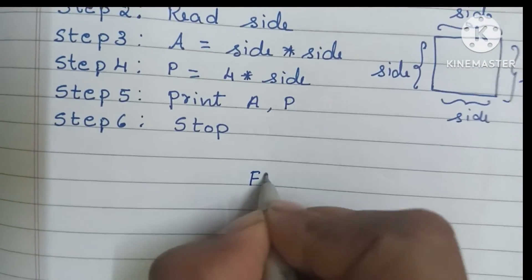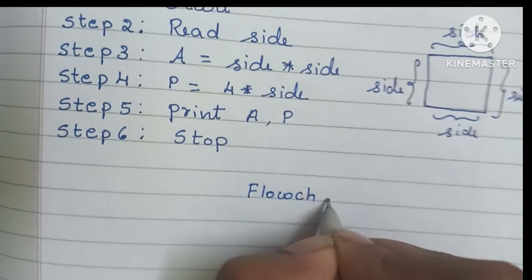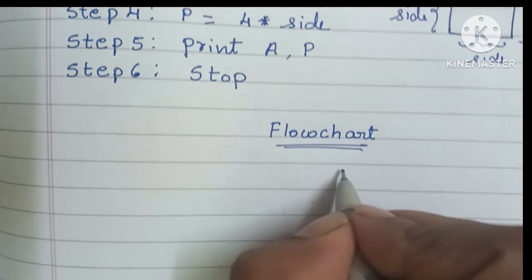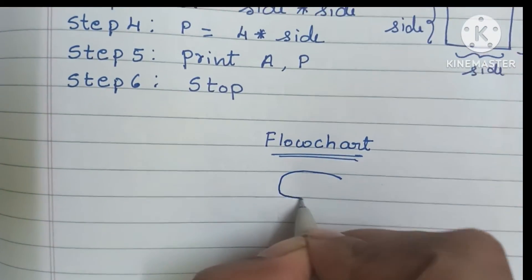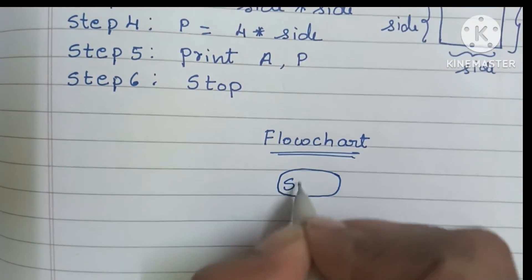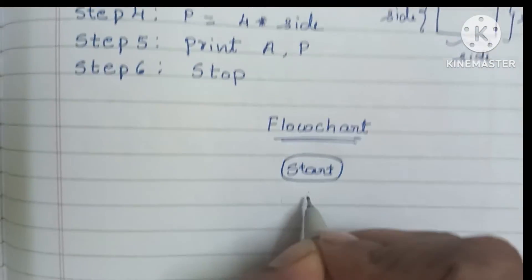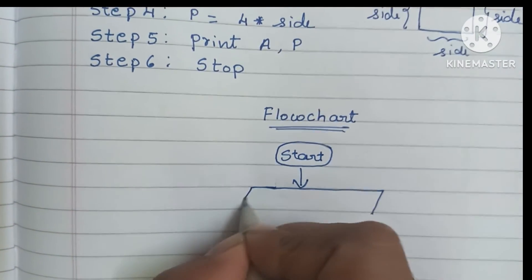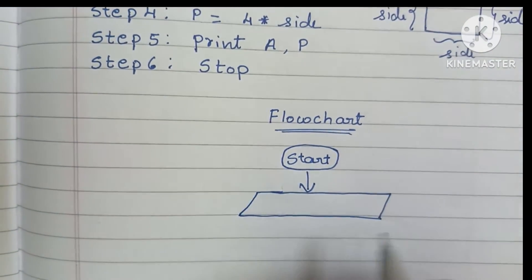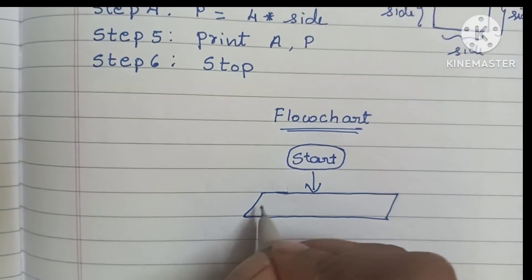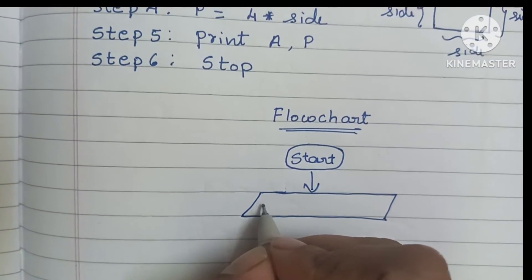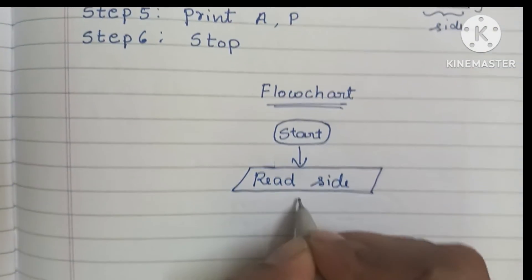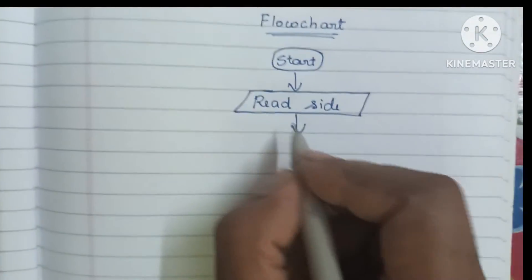Next we have to draw the flowchart. A flowchart is a graphical representation of a solved problem. A flowchart always starts with the start statement, written within an oval shape. Next, input values are always written within a parallelogram shape, within which we write the side value.